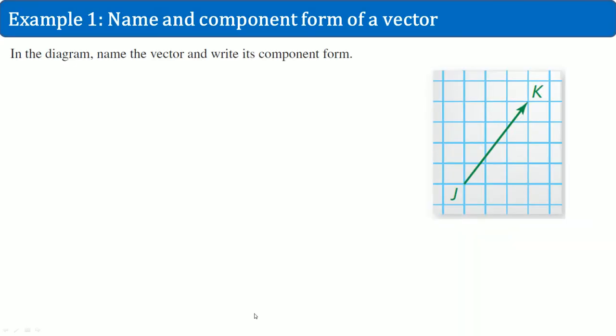In this example, I'm going to show you how to name and write the component form of this vector. Here's the solution. The vector is called JK. It starts with J because that is the initial point and K is the terminal point. The arrow which is on top just indicates that it is a vector. How do we go from J to K? Because we need that to find the components.